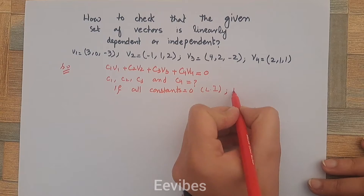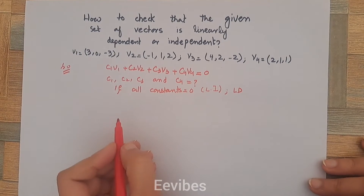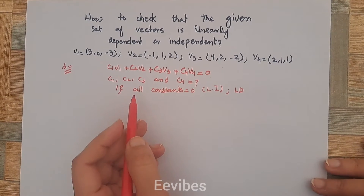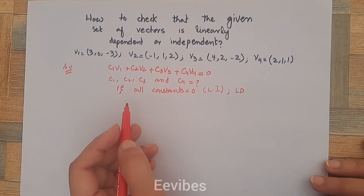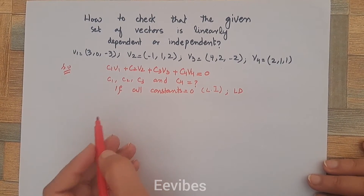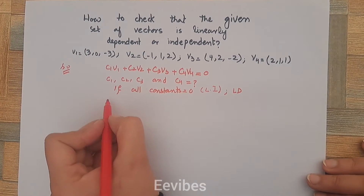Otherwise the vectors are linearly dependent if any of the constants comes out to be some non-zero number. So let's start solving it.